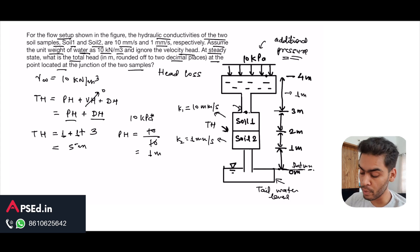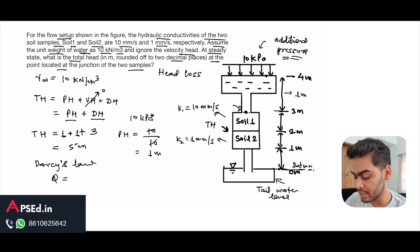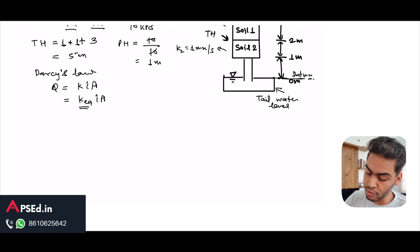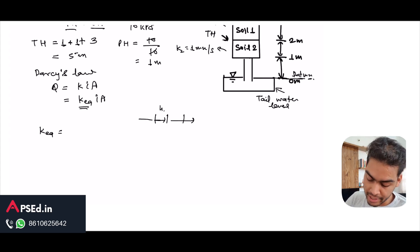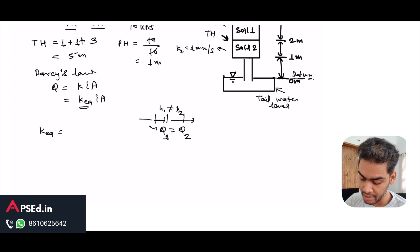Therefore, datum head (3 m) plus pressure head (2 m) gives a total head of 5 meters before flow takes place. Now we apply Darcy's law: q = k·i·A. Since it's a stratified soil with layers in series, we use an equivalent permeability k_eq instead of a single k. The discharge through soil 1 equals the discharge through soil 2 because they are in series — discharge remains constant.